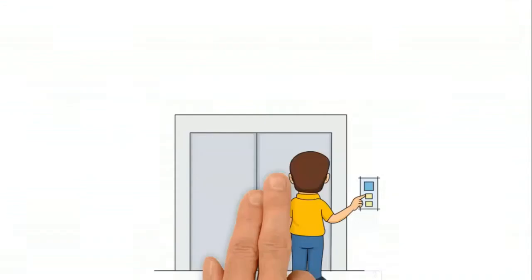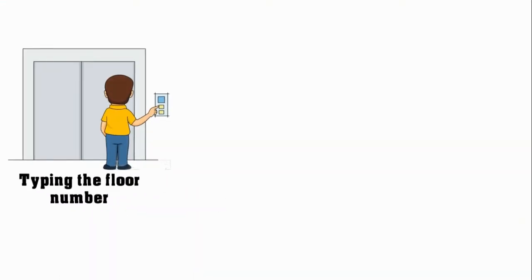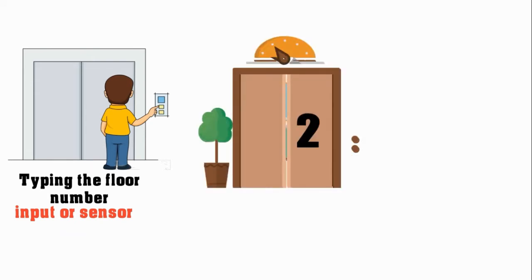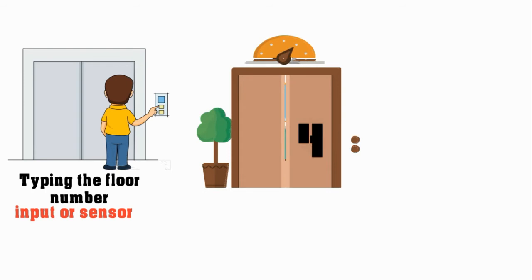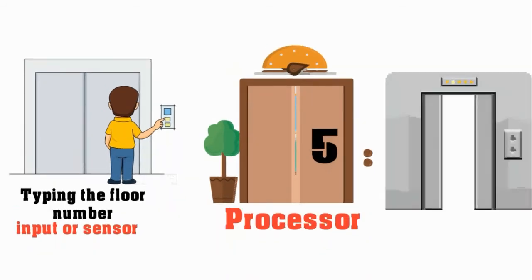You can also explain it this way. In an elevator, typing the number of the floor you are going to is the input. Once the floor starts counting, that's the process — the processor. And then the door opens for you to come out, which is the output.